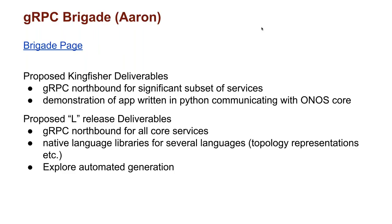For GRPC, we are focusing in Kingfisher on support for a significant subset of the core services being supported via GRPC, basically communication for off-platform applications. We also hope to have a demonstration application written in Python, or potentially another language, to demonstrate usability and show an application outside ONOS communicating with the ONOS core. For the L release, we'd like to have all core services set up for GRPC communication, and we're exploring native language libraries for other languages to enable more complex constructs. We're also exploring automated generation to keep the protobuf setup consistent with the actual Java interfaces.